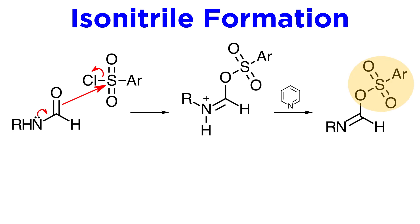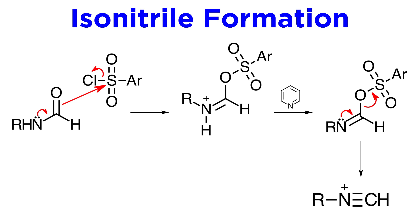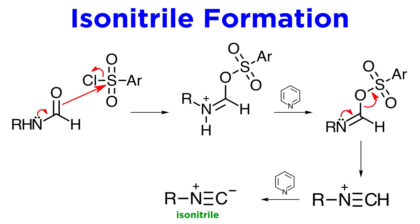The sulfonate is an excellent leaving group due to resonance stabilization, so the reaction will proceed further. Just as with the previous step, this nitrogen will push its lone pair onto carbon, and this time the sulfonate will leave, leading to a protonated isonitrile. Given that pyridine is present in excess, this intermediate is also deprotonated to yield the isonitrile.